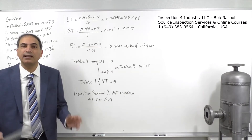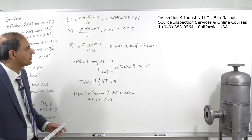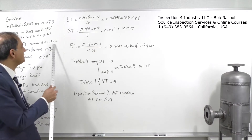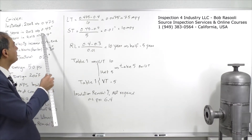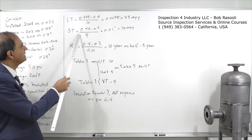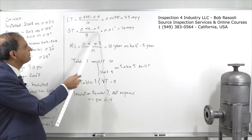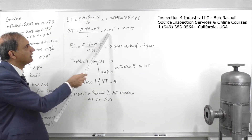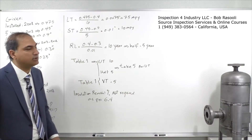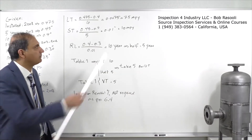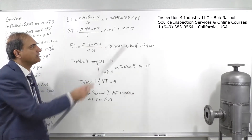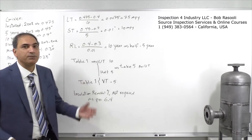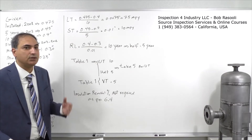For the short-term corrosion rate, we use the last two measurements: the previous reading from 2013 (0.45 inches) minus the current 2018 reading (0.4 inches), divided by 5 years. This gives a corrosion rate of 0.01 inches per year, equal to 10 mpy. So our short-term rate is 10 mpy and our long-term rate is 7.5 mpy.